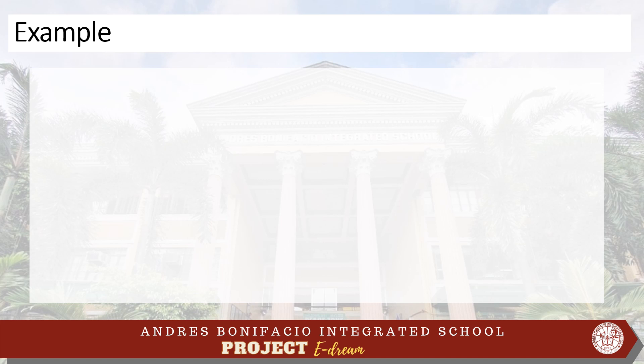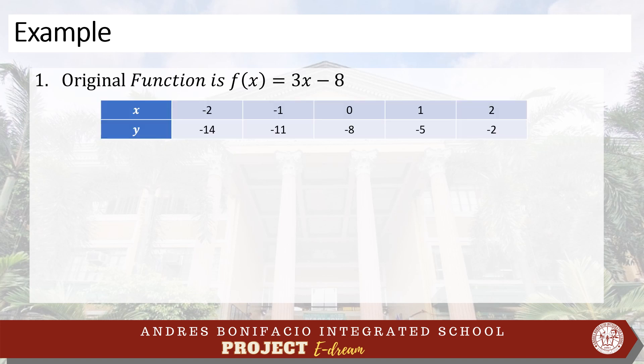Given this example, let us show the inverse function of the original function. I will start with the original function which is f(x) = 3x − 8. Using a table of values, I will show the domain and the range of the original function. Our domain in the original function is: negative 2, negative 1, 0, 1, and 2. Our range in the original function is: negative 14, negative 11, negative 8, negative 5, and negative 2. The inverse is x⁻¹ = (x + 8) / 3.